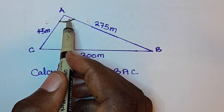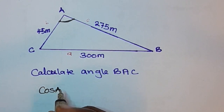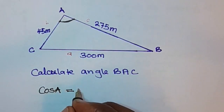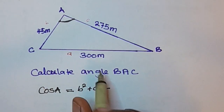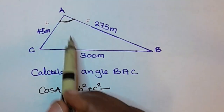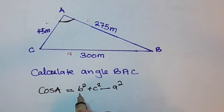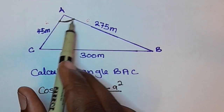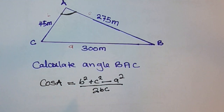Since we are looking for angle A, we use the rearranged cosine rule: cos A equals b squared plus c squared minus a squared, all divided by 2bc — where a is the side opposite the angle we are looking for, and b and c are the sides making that angle.